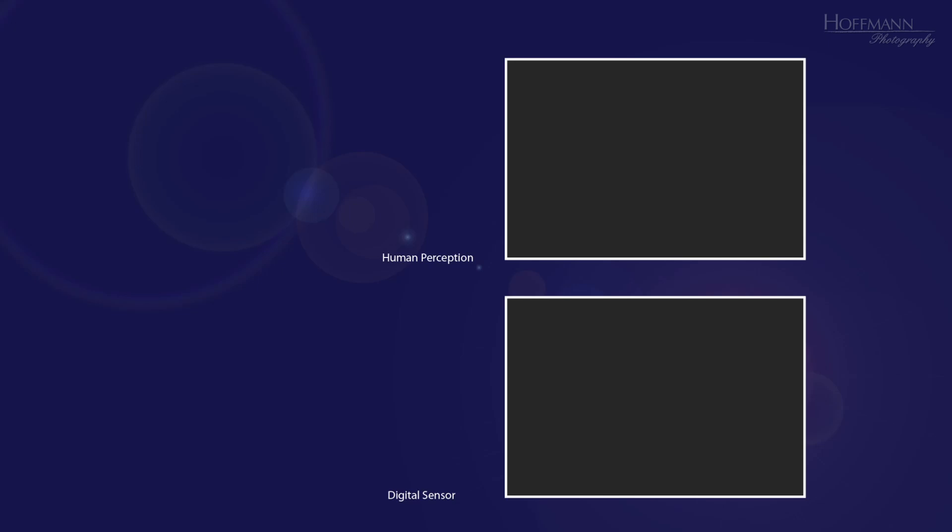For our thought experiment, we assume that we set the camera to a fixed shutter speed, a fixed aperture and a fixed ISO number, whatever the values may be. Without any light, of course, we don't see anything and the sensor produces a black image.